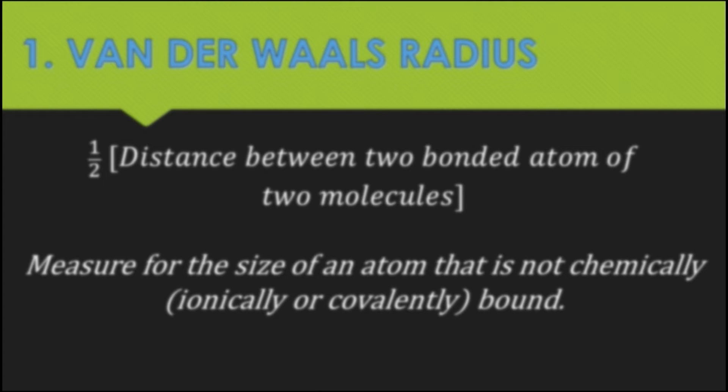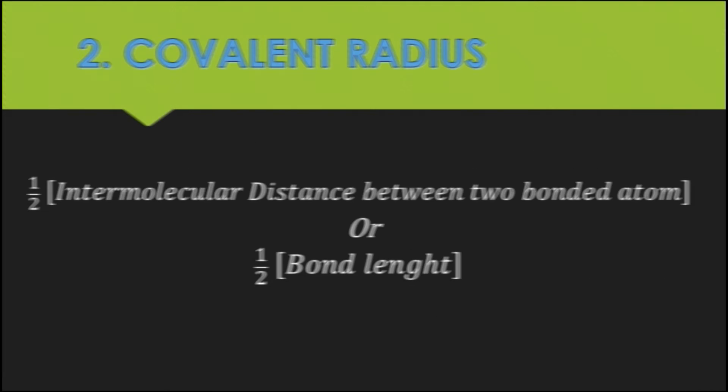The first is the van der Waals radius. It is one-half the distance between two bonded atoms of two molecules and is useful for measuring the size of atoms which are not chemically bonded. The second is covalent radius. It is one-half of the distance between the nuclei of two covalently bonded atoms of the same element in a molecule.